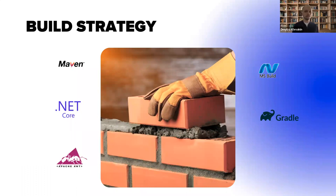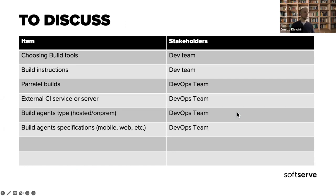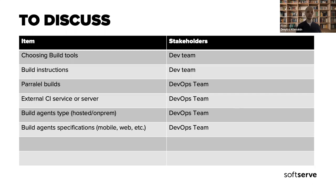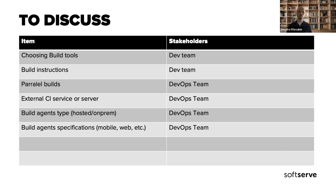For build pipelines, we need to discuss what build tools to use and what the build instructions are. We usually get build instructions from the development team and then script them into a multi-staged pipeline — or drag and drop if you use visual pipelines in Jenkins, Azure DevOps, or any other tool. We might also think about parallel builds, external CI services, and build agent type — hosted or on-prem — especially when thinking about security issues of the pipeline.